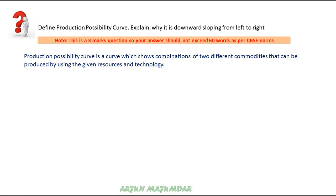First of all, you have to give the definition. The definition of the production possibility curve is: a curve which shows a combination of two different commodities that can be produced by using the given resources and technology. In PPC, we study two commodities that can be produced by the economy. With the given resources and current technology, the maximum production we can achieve — that is the production possibility curve.